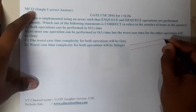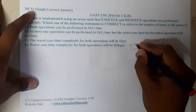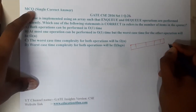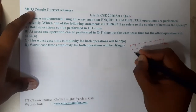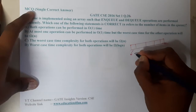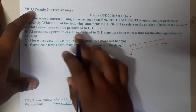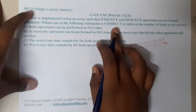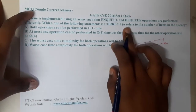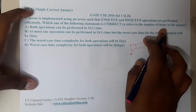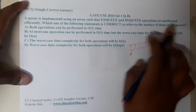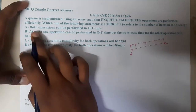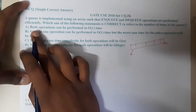Since the queue is implemented using an array, we have two different pointers. Insertion will be taking place at one end and deletion at the other end. Which one of the following is the correct operation? Here, n refers to the number of items in the queue.